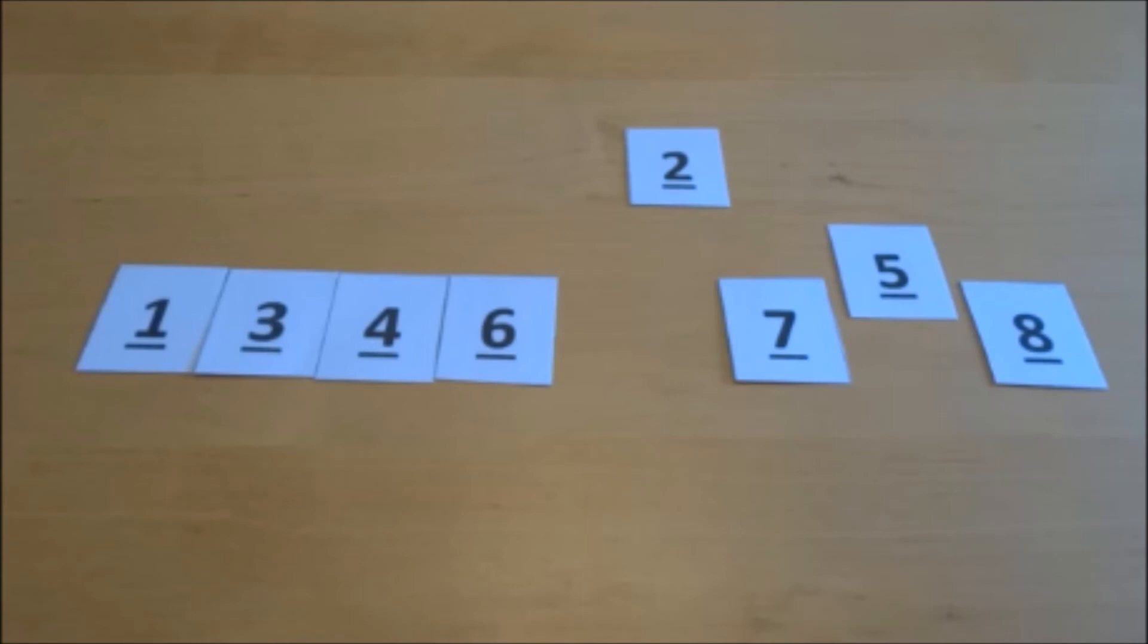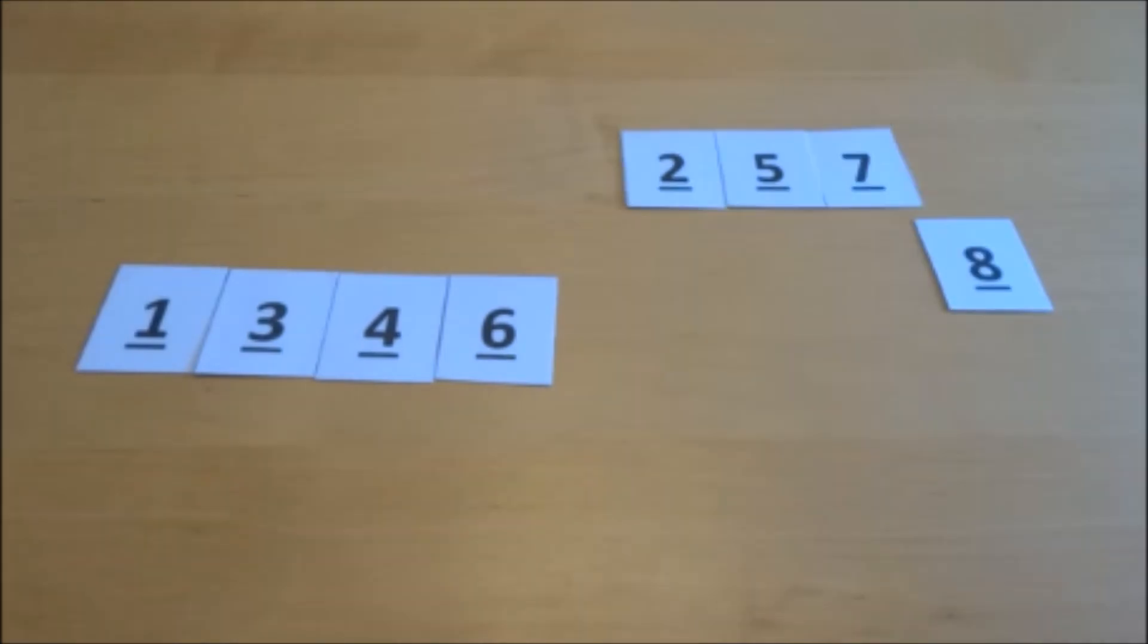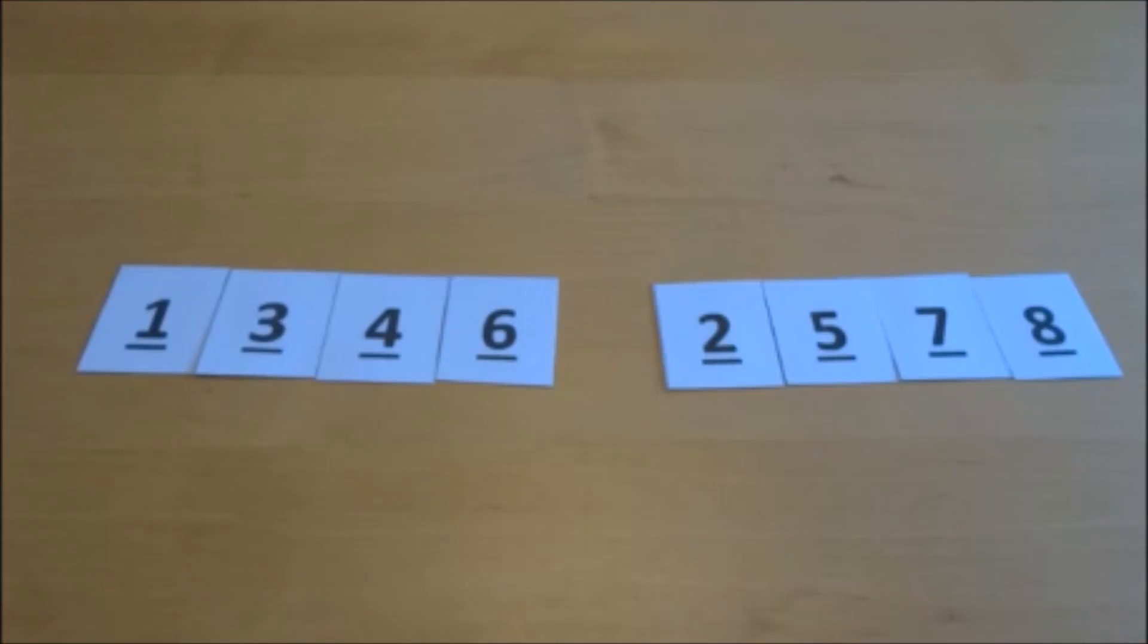So compare the first number in each array and place whichever one is smaller into a new array. And keep repeating this until all of the numbers in that second half are also in their sorted order. And this will leave you with two sorted sub-arrays.